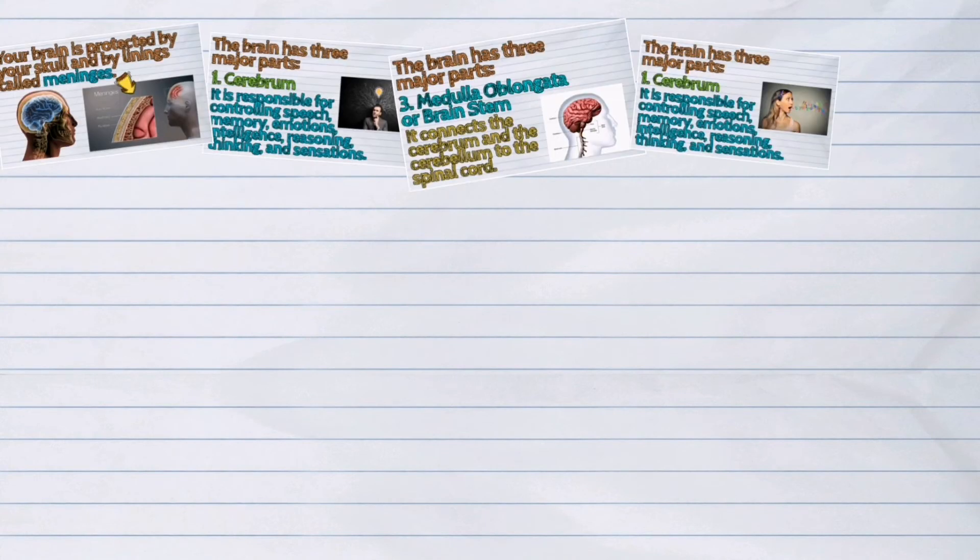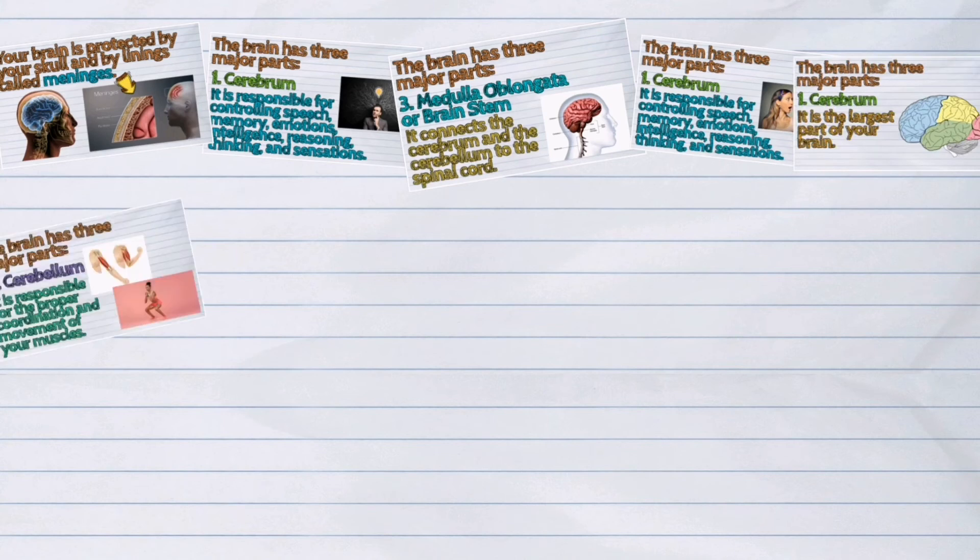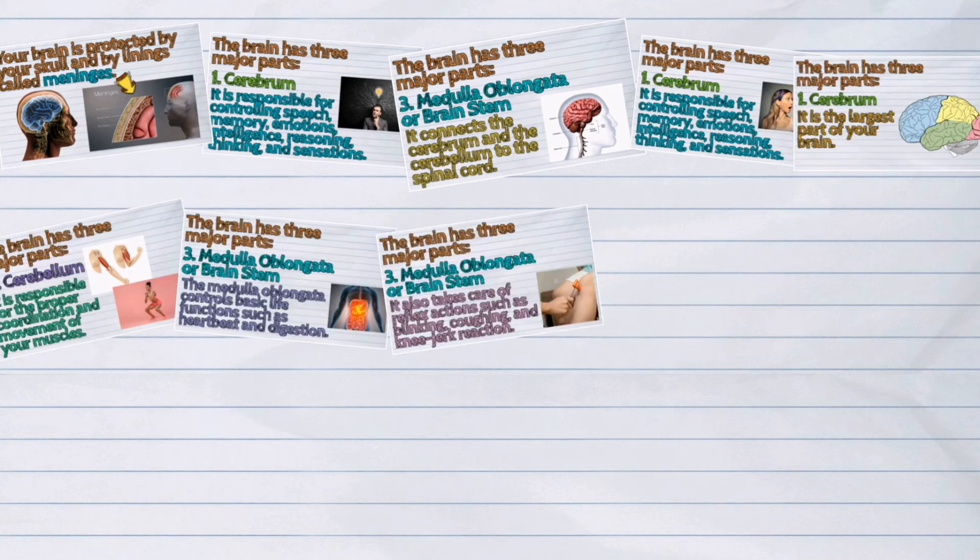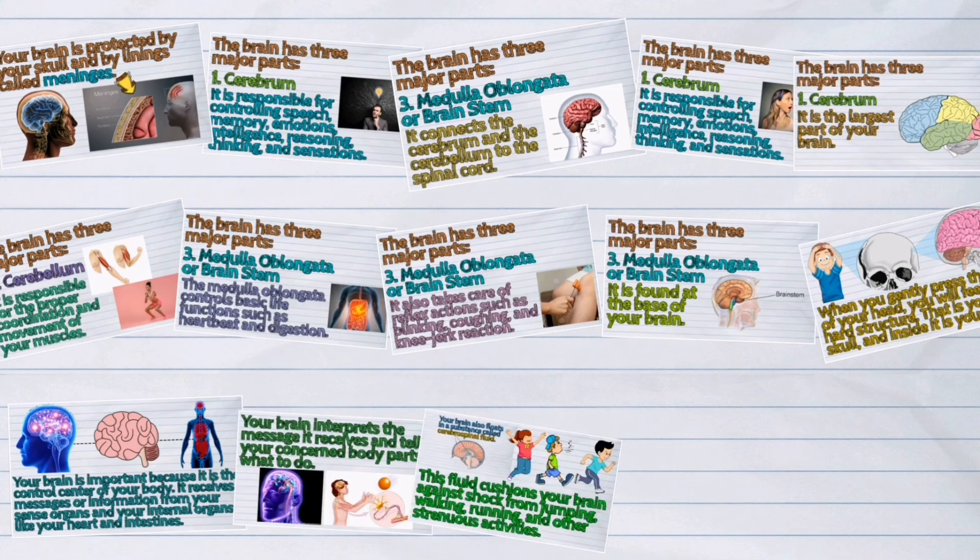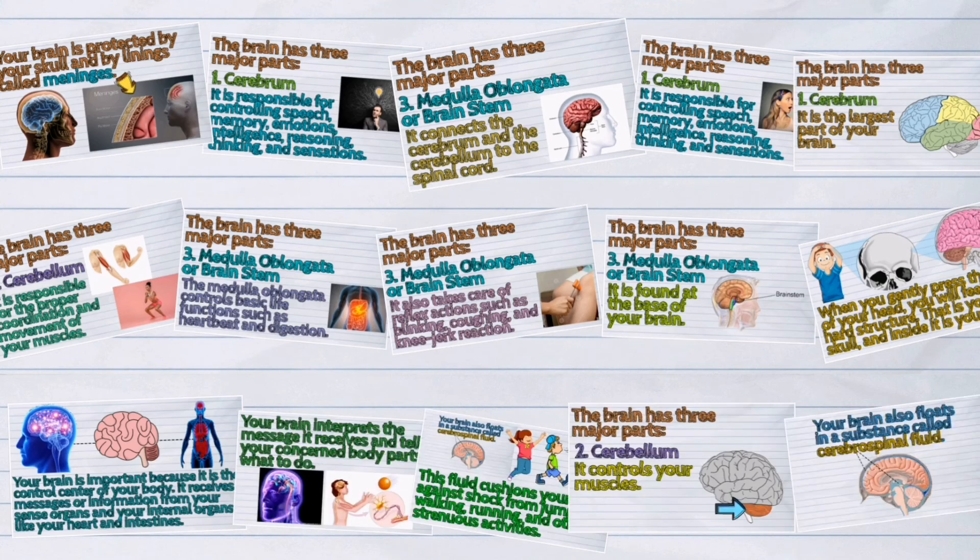And those were the three major parts of the brain. Again, the brain is important because it is the control center of the body. The three major parts are the cerebrum, cerebellum, and medulla oblongata.